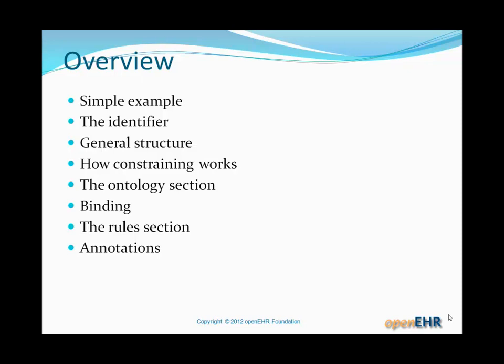The structure of what we'll look at is as follows. We'll have a look at an example and then we'll have a quick look at the various parts of an archetype without going in too deeply. So the identifier, the general structure, what constraining is — because that's one of the key concepts of archetypes — the ontology section, a quick look at binding, and then something called rules and annotations.